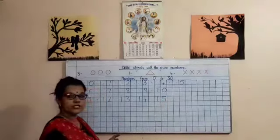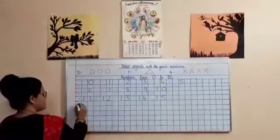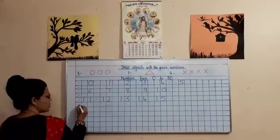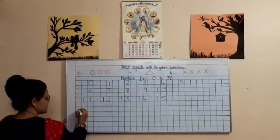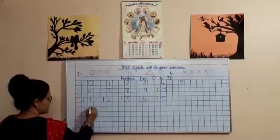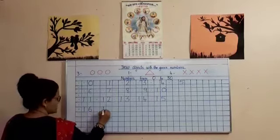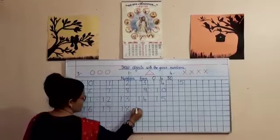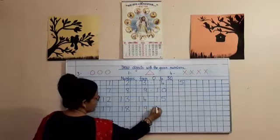What comes after 15 children? Yes, very good, 16. So as you had done above, you put this dot over here, leave this line, come to the next line, put one dot and then write 16, dot, 17, dot, 18, dot, 19, dot, 20.